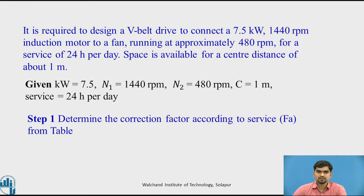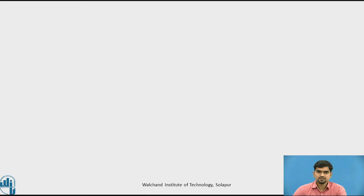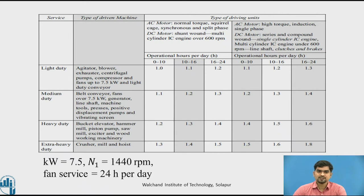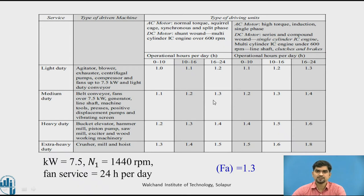Step 1: we have to determine the correction factor according to the service. From the tables we have to find out the correction factor that is Fa. As they have given us 7.5 kilowatt, the speed of the faster pulley is 1440, and the fan service is 24 hours per day. We are getting Fa equal to 1.3. For the 24-hour service we are getting the service factor Fa equal to 1.3.